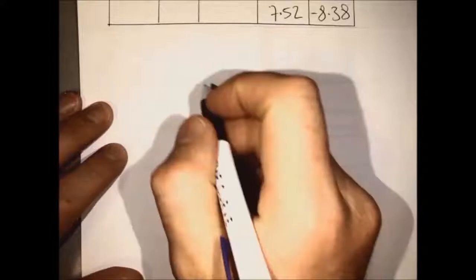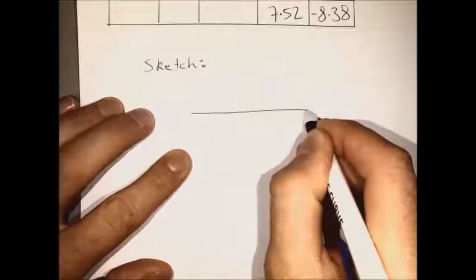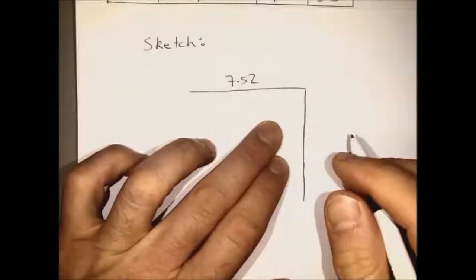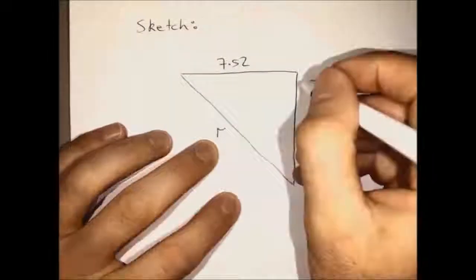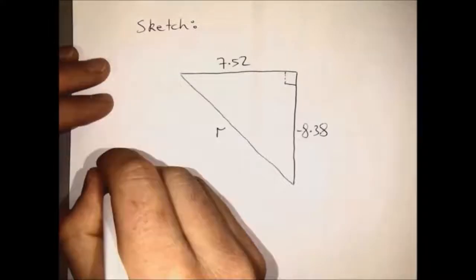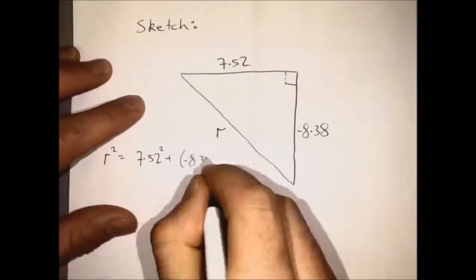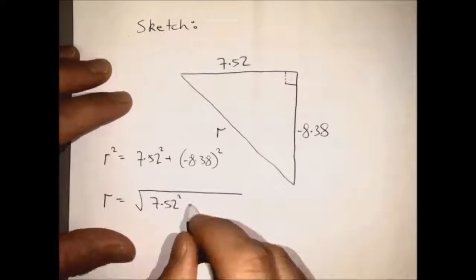So our vector from its origin goes out the x-axis 7.52, and then it goes downwards 8.38. So this is a right angle triangle, and if we can figure out the length of side r marked there, that's the magnitude of our vector.